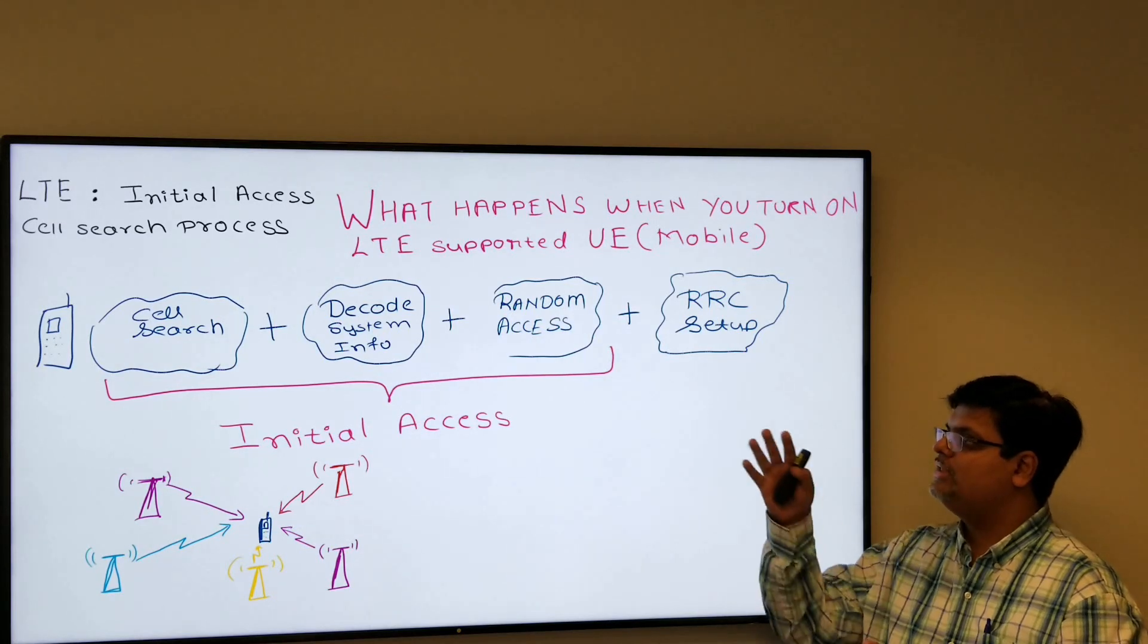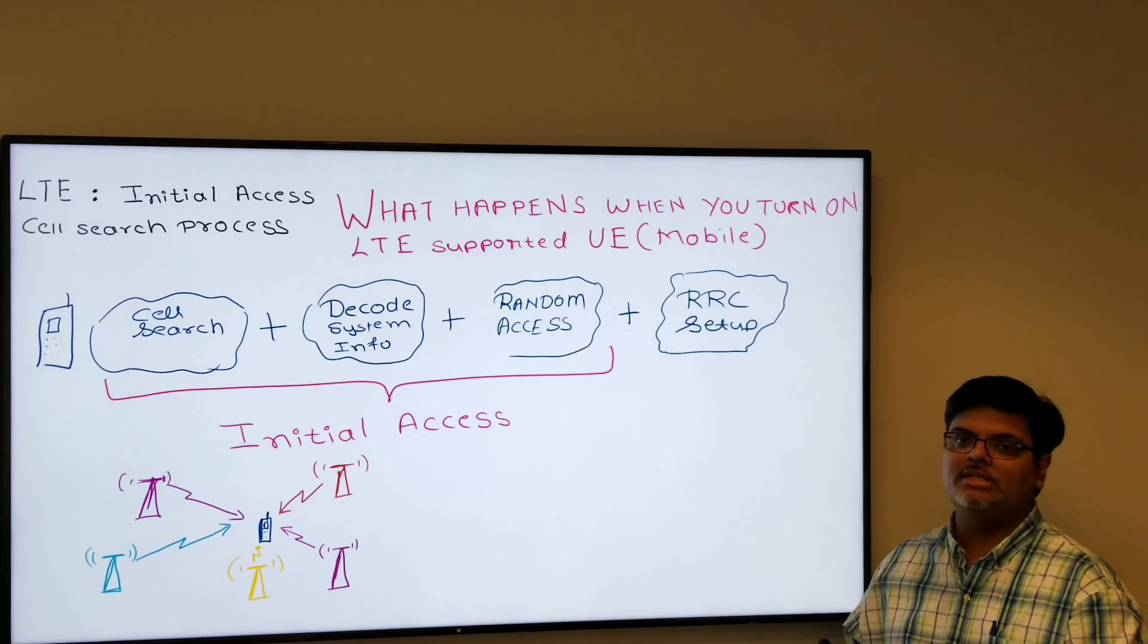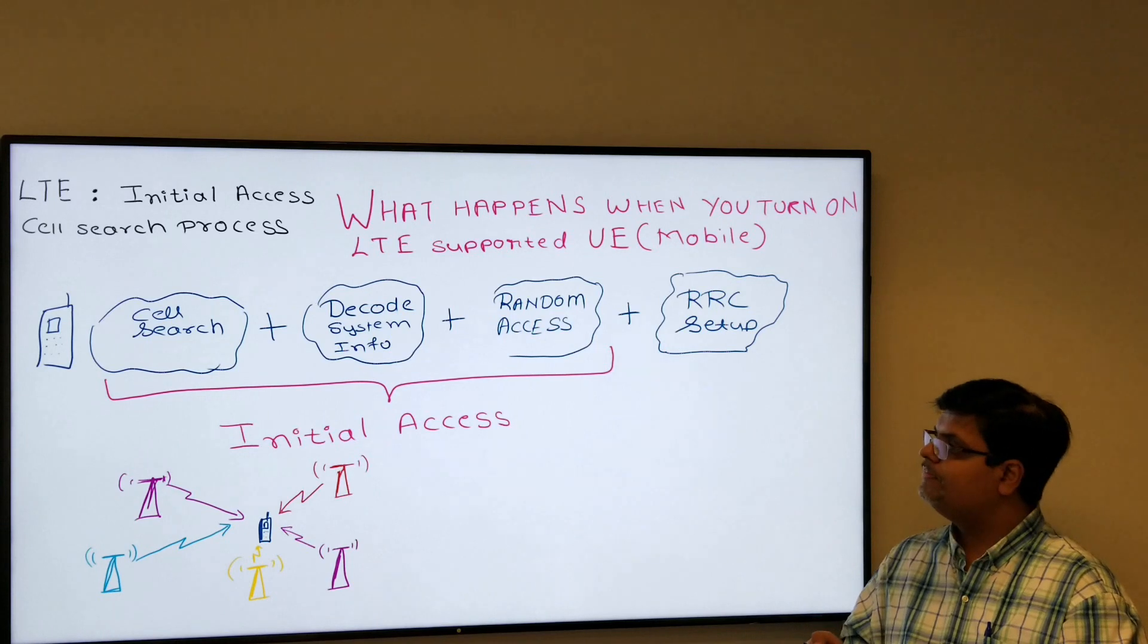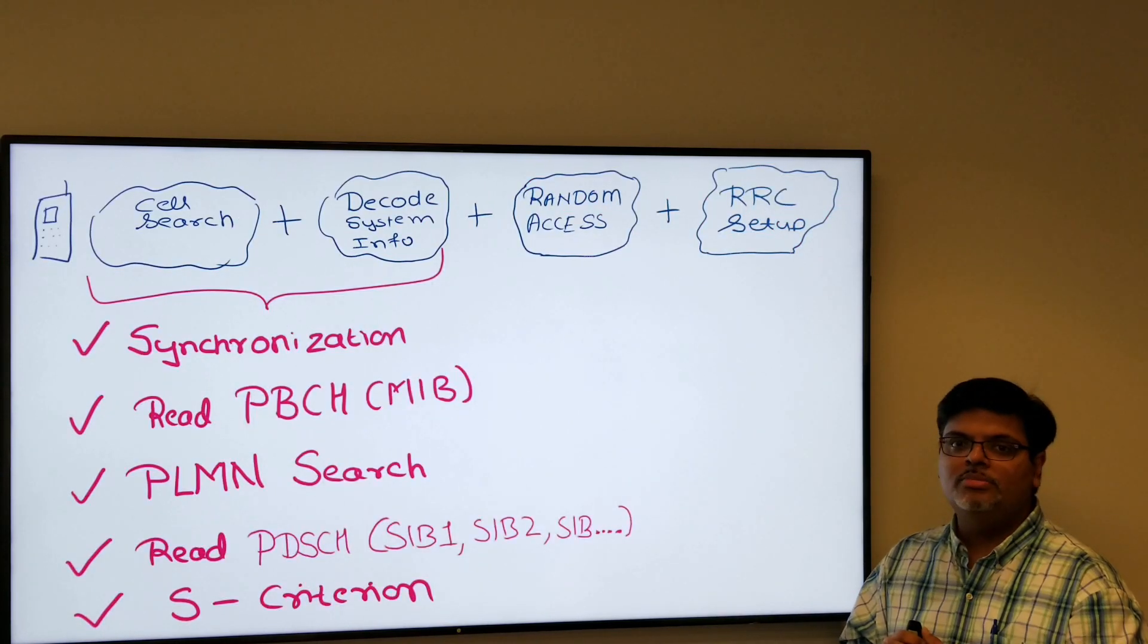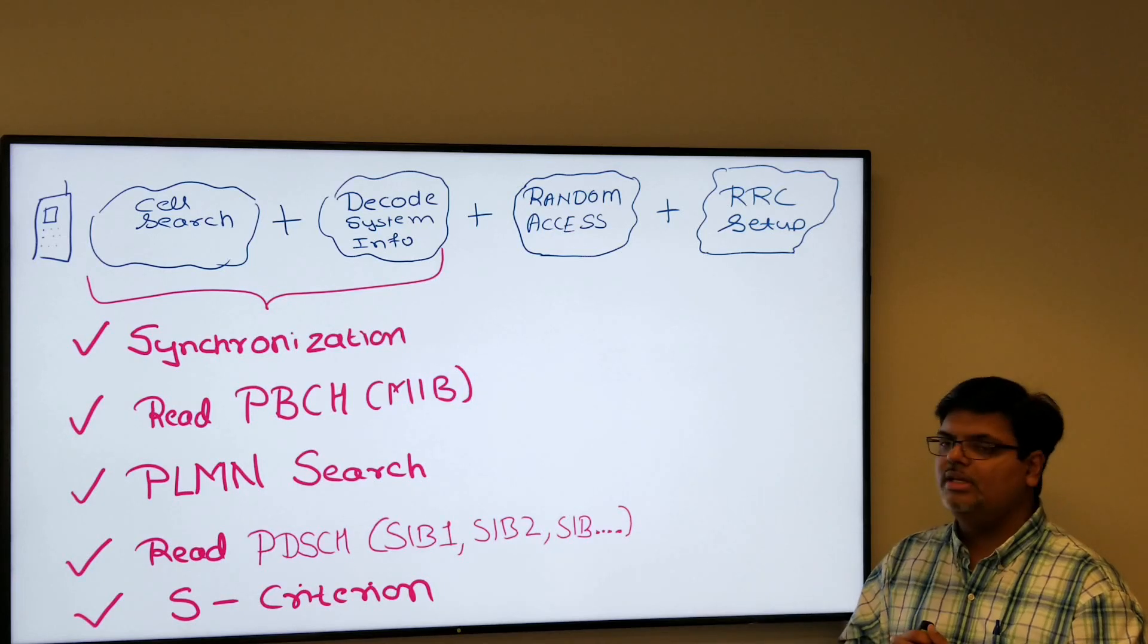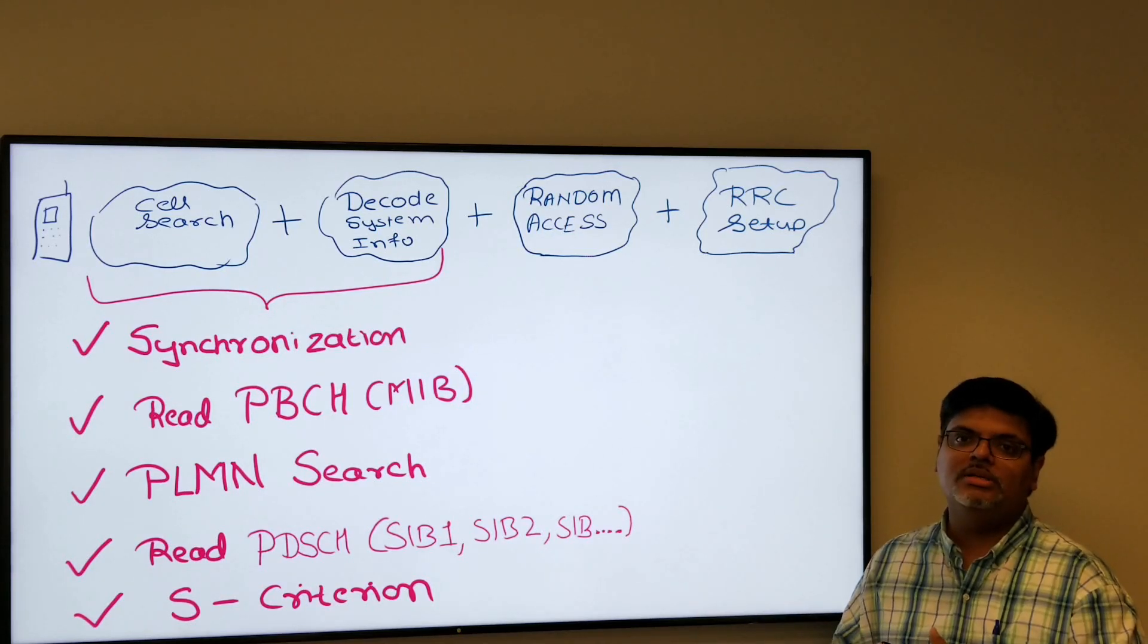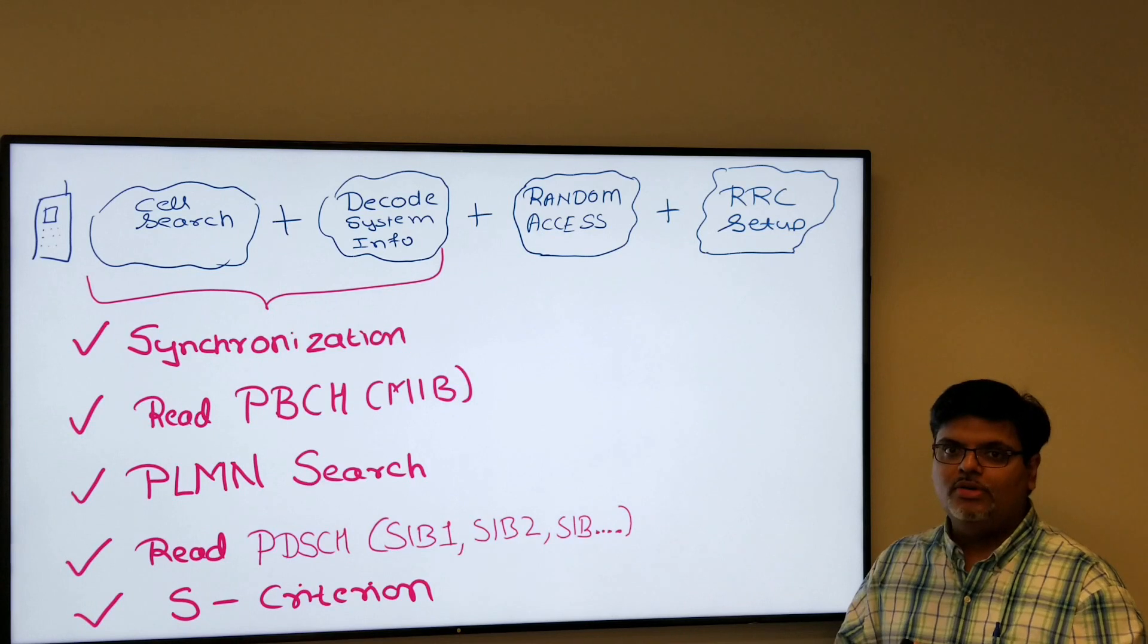This video will only focus on the first two parts which is cell search and decoding system info. For the initial access, for every different process and procedure we have a separate video. For cell search and decoding system information, what different things it has to do: synchronization which is time synchronization, slot synchronization, frame synchronization, reading your system information.